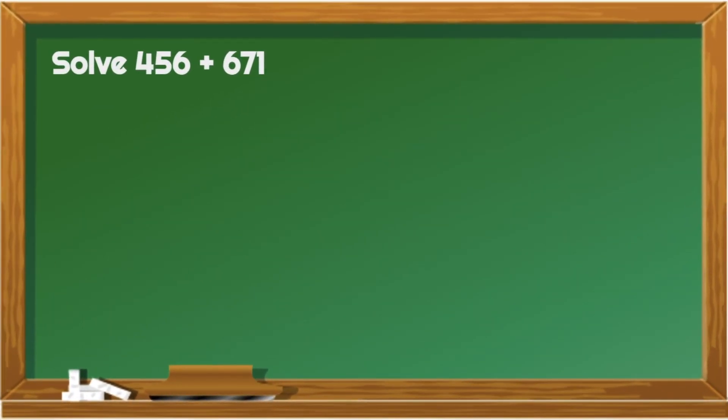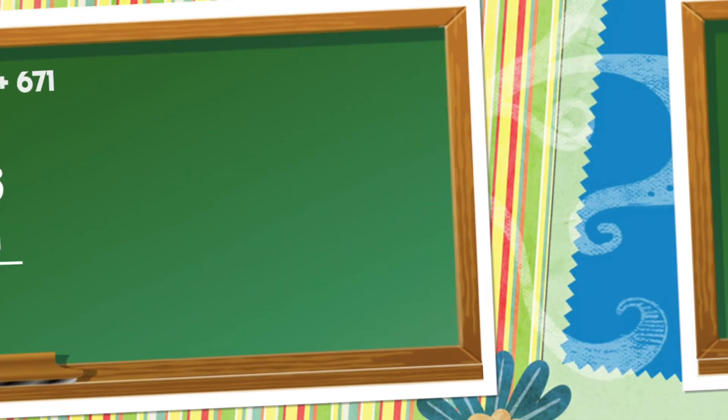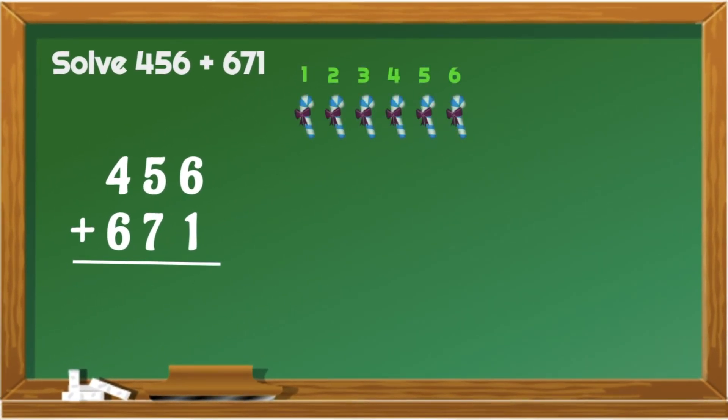For our last example, we're going to add 3-digit numbers. 456 plus 671. First thing to do is to list down all the addends into columns. Let's add 6 and 1. That would give us 7.